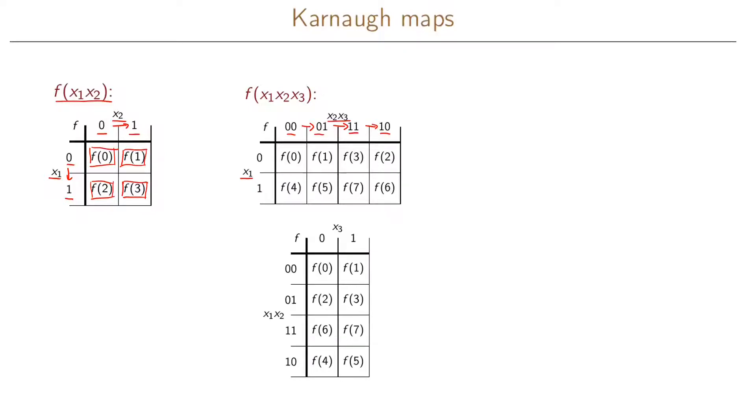And also when we go from the last column back to the first column, we will also have a change in only one variable. And again, since we have three variables, we only have one variable in the other dimension.